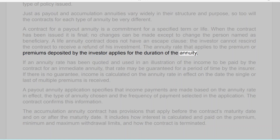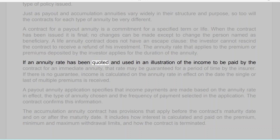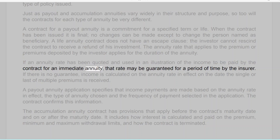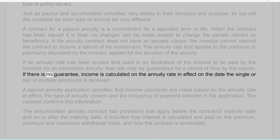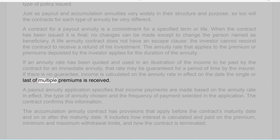A life annuity contract does not have an escape clause — the investor cannot rescind the contract to receive a refund of his investment. The annuity rate that applies to the premium or premiums deposited by the investor applies for the duration of the annuity. If an annuity rate has been quoted and used in an illustration of the income to be paid, for an immediate annuity that rate may be guaranteed for a period of time by the insurer. If there is no guarantee, income is calculated on the annuity rate in effect on the date the single or last of multiple premiums is received.